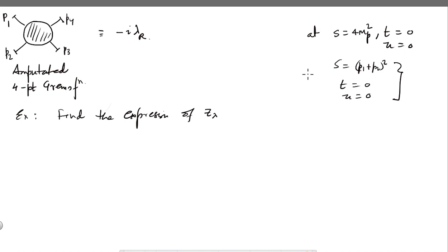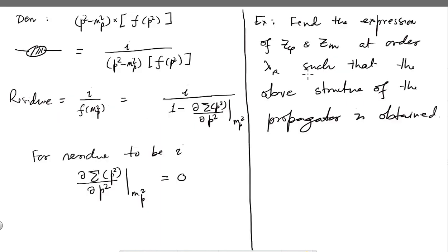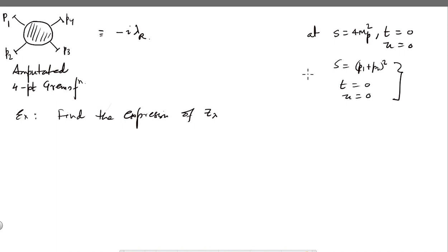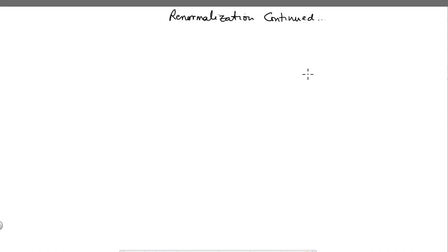You can also have off-shell renormalization. We have also seen that our results will depend on μ — the Green's functions that we write. So let us try to understand what things change and what things do not change when you do a renormalization. That is what I want to talk about in this lecture.